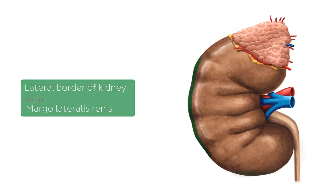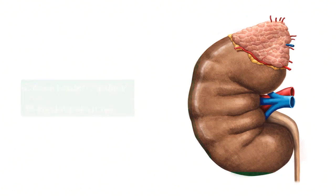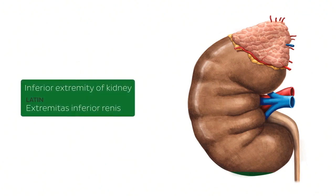Moving on to another extremity found a bit more inferiorly — this is the inferior extremity of the kidneys, also known as the inferior pole. This is the lowest part of the kidneys, as can be seen here on the image highlighted in green.